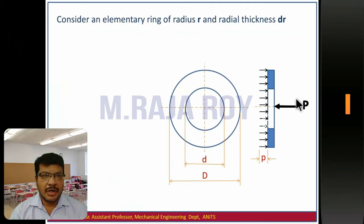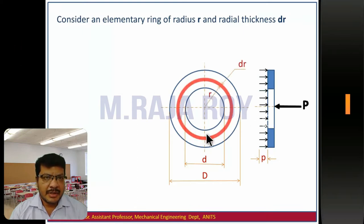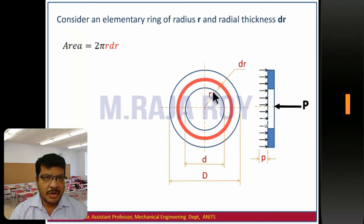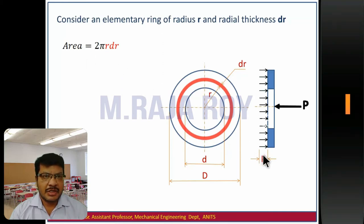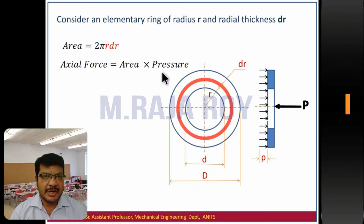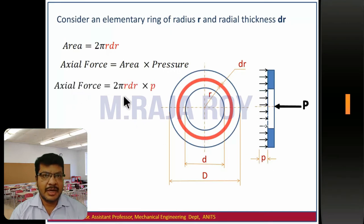To get the total operating force and total torque transmitting capacity of the clutch, consider a small element at a distance r of thickness dr as shown here. The area of this small element is 2πr·dr, where 2πr is the circumference and dr is the thickness. Once the area is known and the intensity of pressure is known, you can get the axial force of the small element — that is area into pressure, which equals 2πr·dr·p.